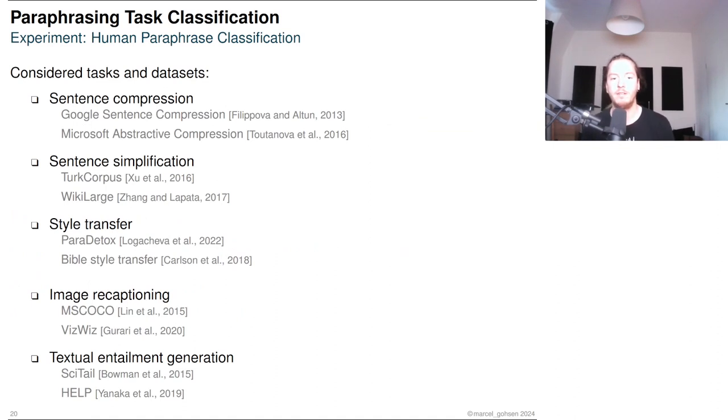To find out whether the differences of paraphrases from different tasks is noticeable to a human, we conducted an experiment in which humans were given a paraphrase pair and had to label it with one of the following five tasks: the three semantically equivalent paraphrasing tasks sentence compression, sentence simplification and style transfer, and the two semantically similar paraphrasing tasks, image recaptioning and textual entailment generation. The ground truth for examples from these tasks we took from the 10 datasets that are listed here.